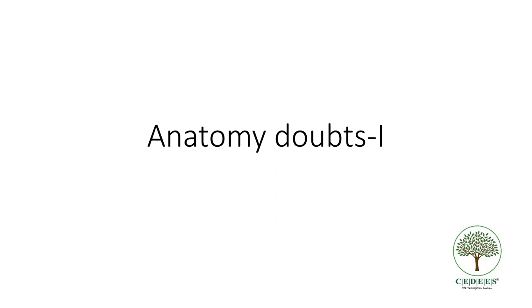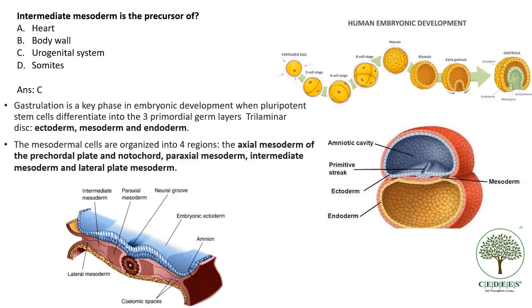Today we will be covering some of the anatomical doubts. First one: intermediate mesoderm is the precursor of? The answer is the urogenital system.